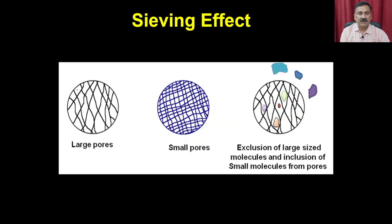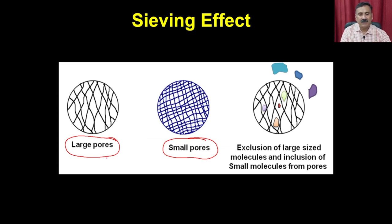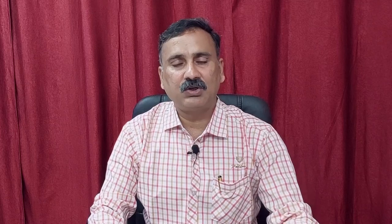Gel filtration chromatography separates a small ball from a large ball through the sieving effect. The beads in the column have pores — large or small. When molecules are loaded onto the column, they either enter into the pore or are excluded from the pore. Exclusion of large molecules and inclusion of small molecules into the pores results in separation. This is a reverse sieving effect: it excludes large molecules but retains small molecules.